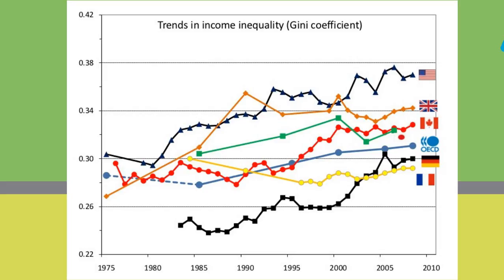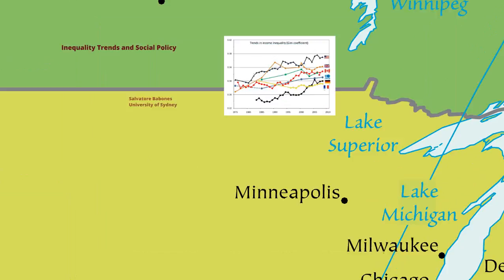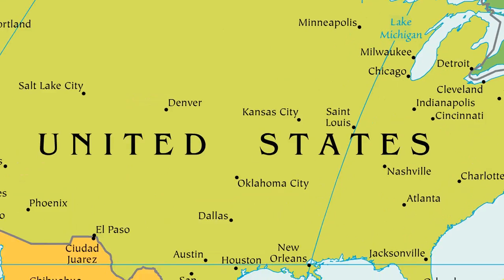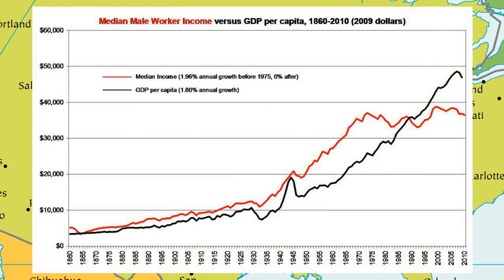The one country that stands out as being the clear leader in inequality, as in so many other things, is the United States of America. This chart shows GDP per capita in the United States — the black line — since 1860.